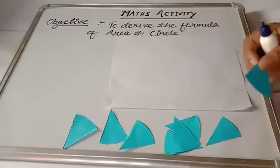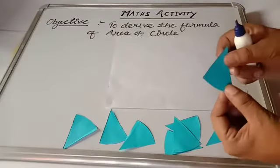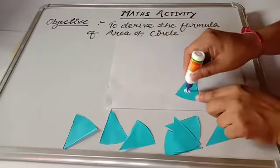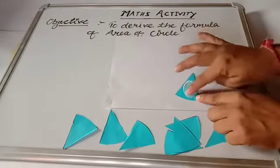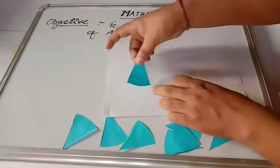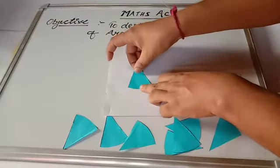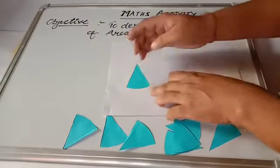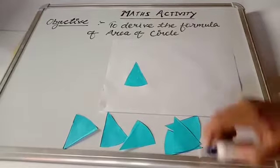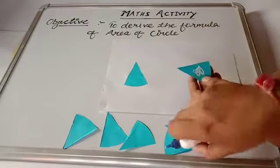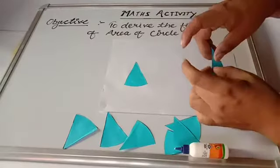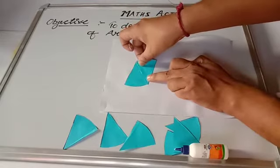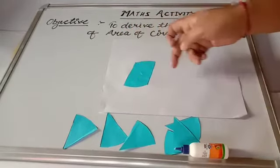Now, with the help of glue, I will paste these triangular parts onto the white chart paper. I am pasting the first part, then the second triangle. We will paste all the triangular parts onto the white chart paper like this.